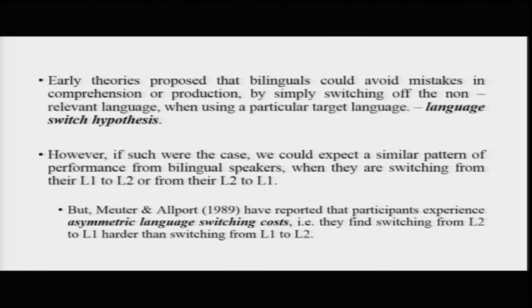Depending on your L1 and L2, you can have L1-to-L2 switch trials and L2-to-L1 switch trials. What Meuter and Allport found was that participants experienced asymmetrical switching costs — specifically, it was harder switching from L2 back to L1 than switching from L1 to L2. In some sense this is slightly counter-intuitive: why should speaking in the native language be difficult? Meuter and Allport called it a paradoxical switch cost. For basic purposes we will call it asymmetric language switching costs, meaning the switching cost from L1 to L2 is not equal to the switching cost from L2 to L1, with L2-to-L1 switch costs being generally higher.